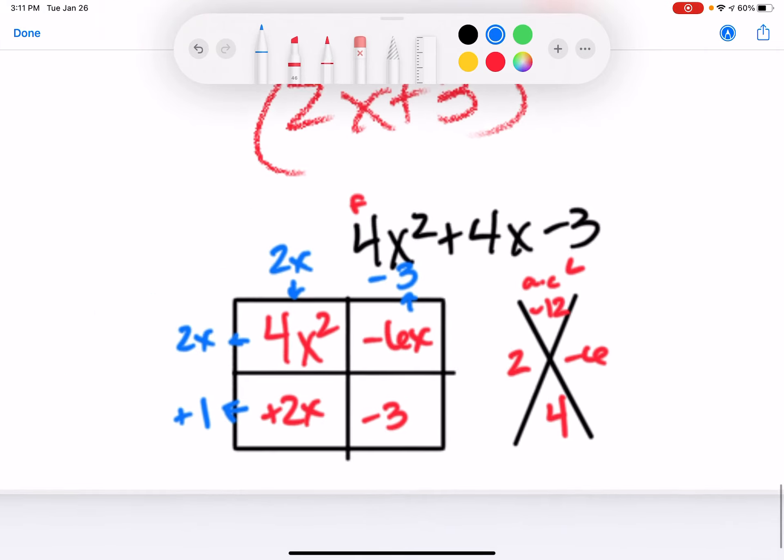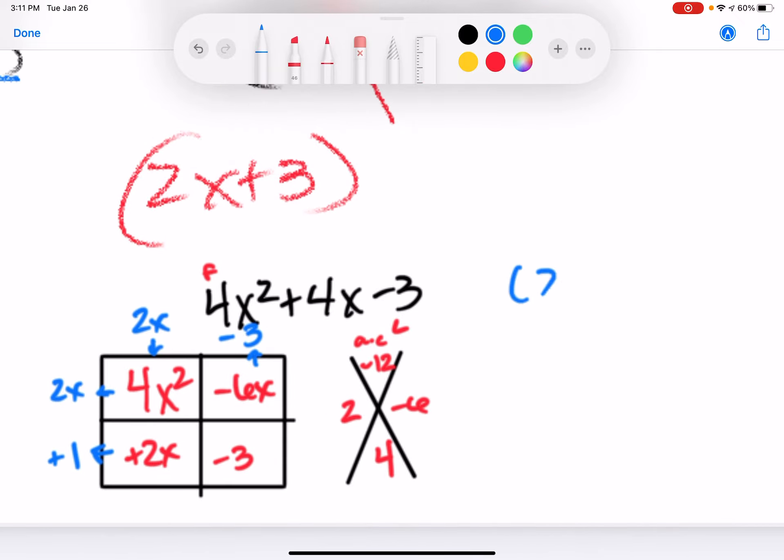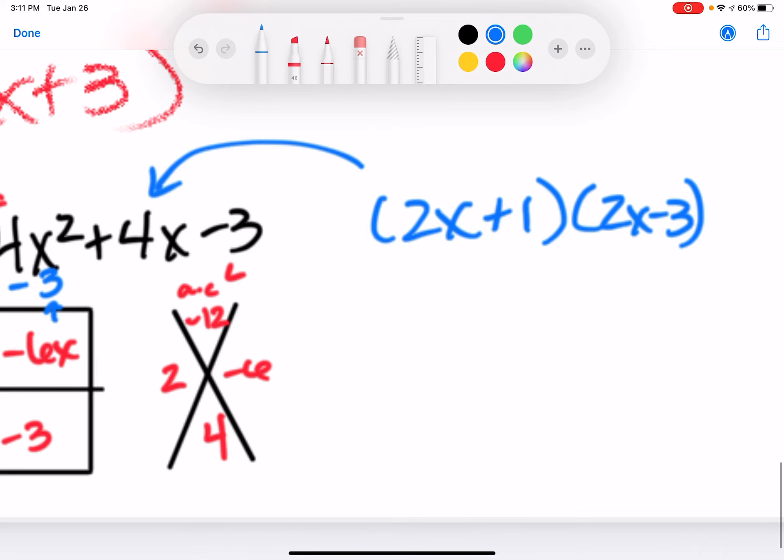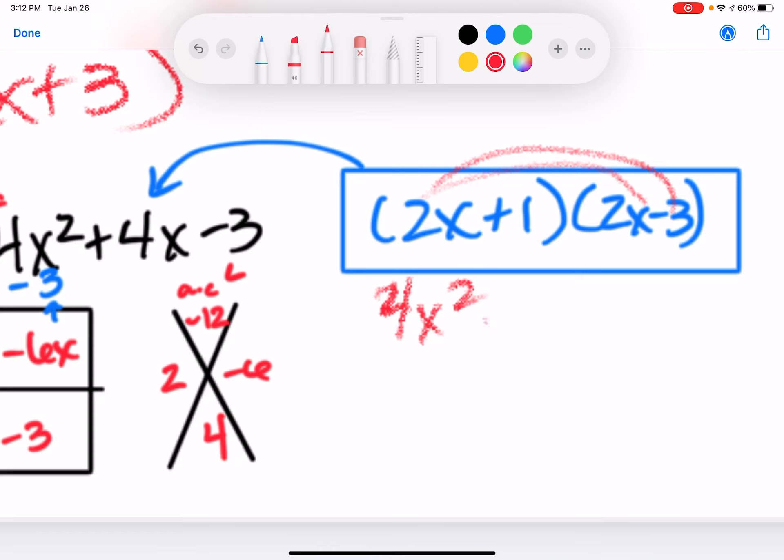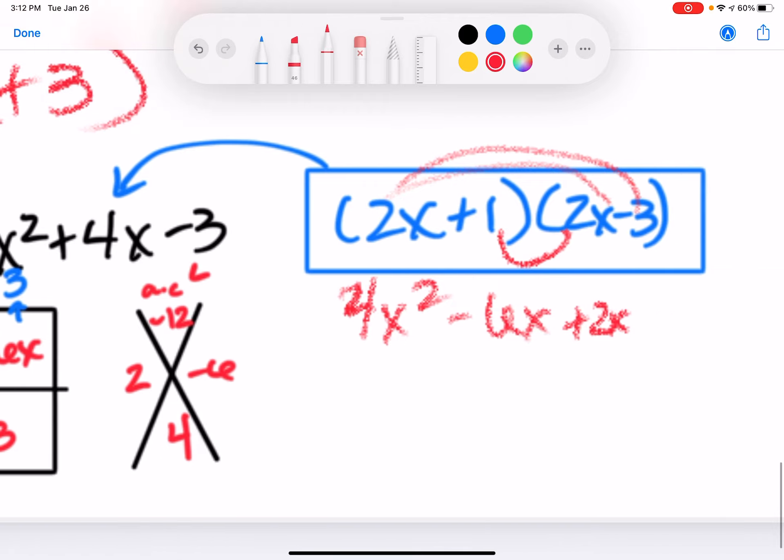And guess what? If we actually box this out or foil it out whichever you prefer, you are going to end up getting this answer as well. That's how we double check that these factors right here are in fact the solution or the original problem given to find this polynomial. So, let me check it real quick. First, outer, inner, and last.